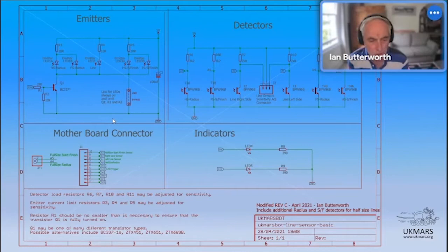You've got one set of emitters for the radius marker and the start finish marker for full size, and a separate pair of emitters for the half size markers. And for those, I've literally just paralleled those off the existing current limiting resistors. You're not struggling for signal off the start finish marker or the radius marker. You're literally looking for, is it there or isn't it there? And the thresholds are pretty good. So you're not going to be too worried about the reduced current there. There's bags of signal coming back if your detectors are in the right place.